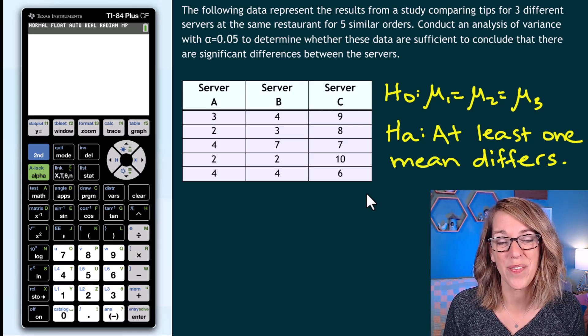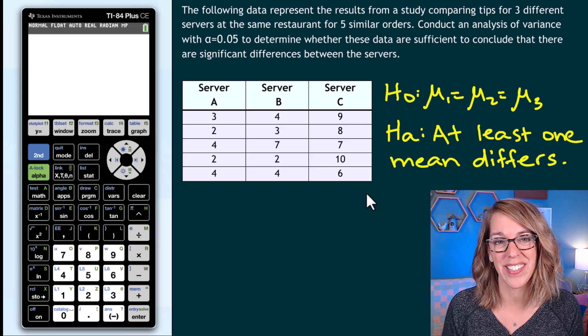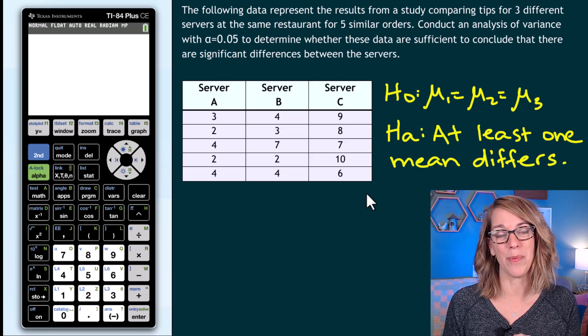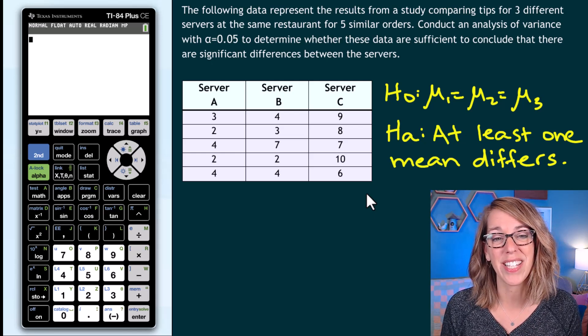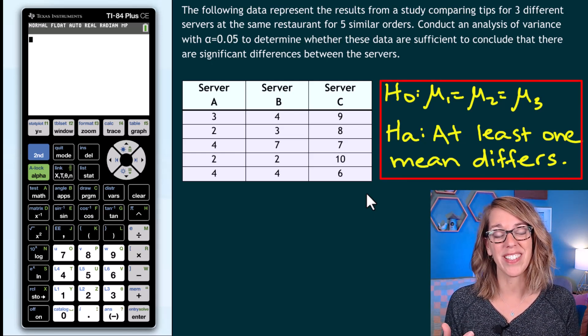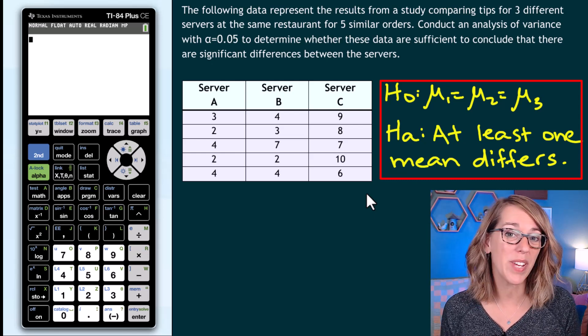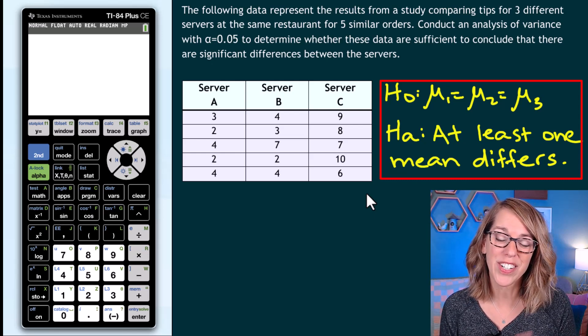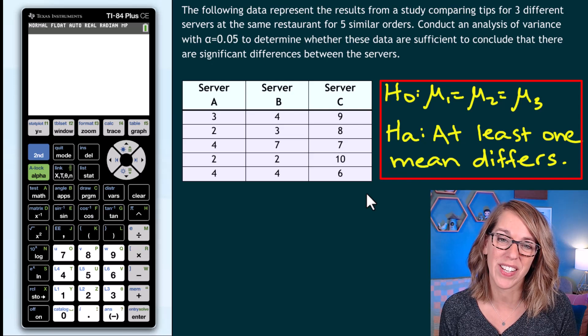It is so easy to run an ANOVA test in the TI-84 calculator. In this particular example, we've got three servers and their tips. Our null says that there's no significant difference between the averages and the alternative says at least one of them differs significantly.